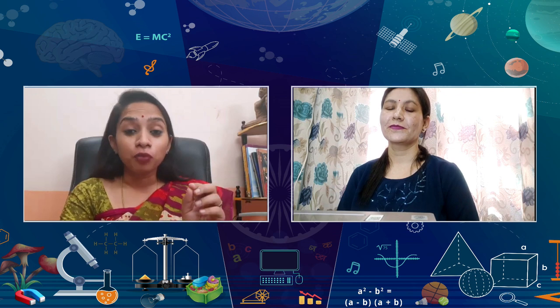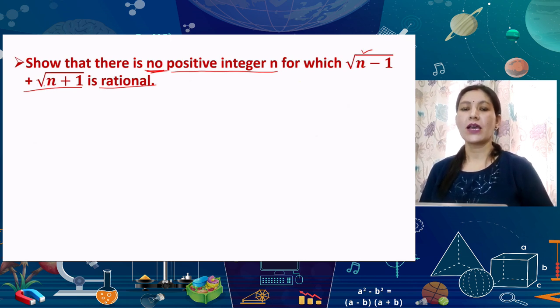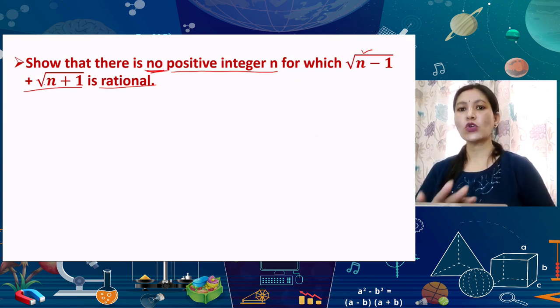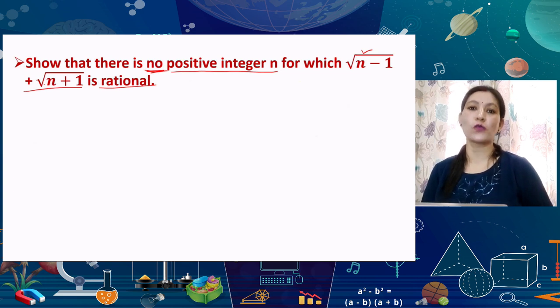Returning to the question: prove that √(n+1) + √(n−1) is irrational for no positive integer n. We assume it is rational, so it equals P/Q. Taking the reciprocal: 1/(√(n+1) + √(n−1)) = Q/P. We then rationalize the denominator — changing the sign between the two surds — giving (√(n−1) − √(n+1)) / ((n−1) − (n+1)) = Q/P, using the identity A²−B².